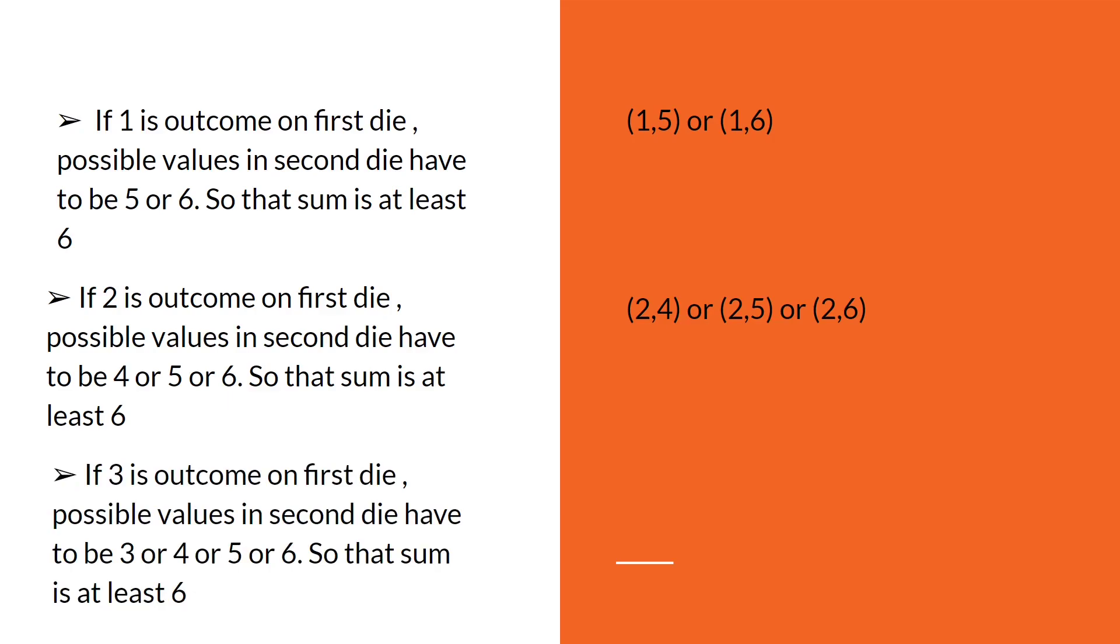If 3 is an outcome on the first die, what will be the outcome on the second die so that the sum is at least 6? Favorable outcomes are 3, 4, 5, or 6, because 3 plus 3 will give us 6, 3 plus 4 will give 7, 3 plus 5 will give 8, 3 plus 6 will give 9. So these are (3,3), (3,4), (3,5), (3,6). If we count these: 2 plus 3 is 5, 5 plus 4 is 9, so 9 will be favorable outcomes.